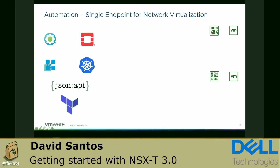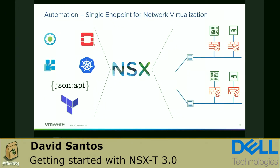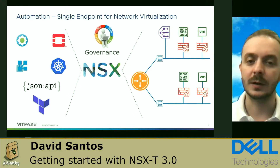The benefit of NSX for automation is that it's a single endpoint for network virtualization. Here on the left we have VRA, VIO, VCloud Director, Kubernetes, Terraform, Ansible, and other platforms. Those orchestrators will deploy VMs and containers. However, for those workloads that communicate, we need to also provide networking. So NSX will provide the firewall, security, network connectivity, routing, and also load balancing.